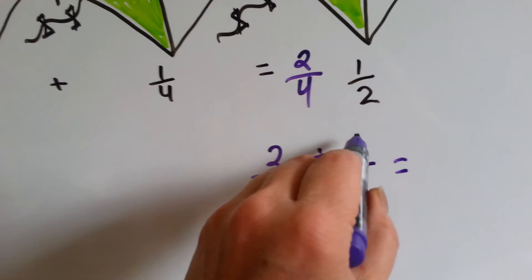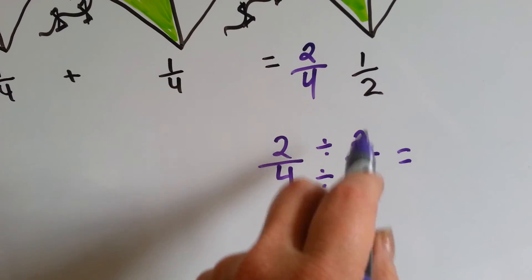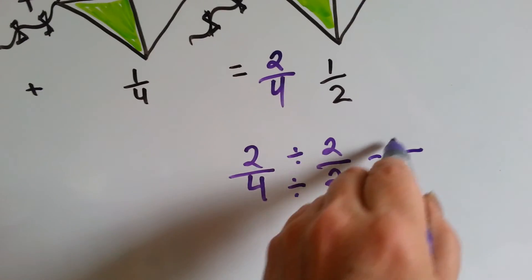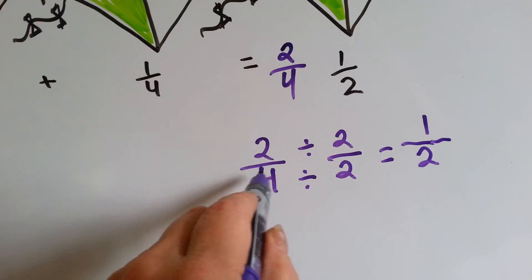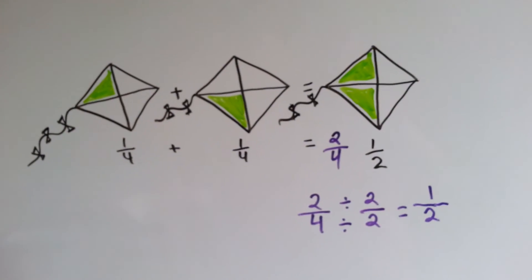They were both divided by 2, because the top and the bottom get jealous of each other. You have to do the same number. 2 divided by 2 is 1, 4 divided by 2 is 2. 2 fourths is the same thing as 1 half. And we can see that 2 fourths is the same thing as 1 half.